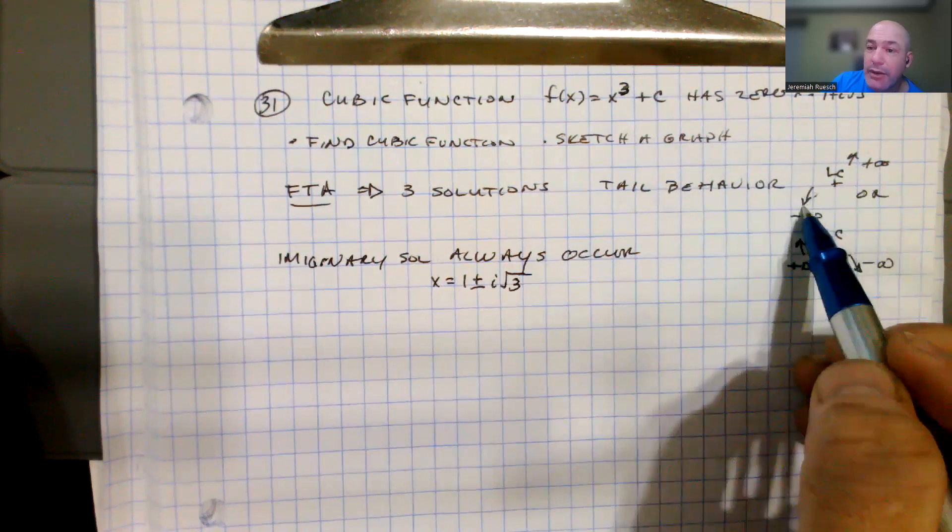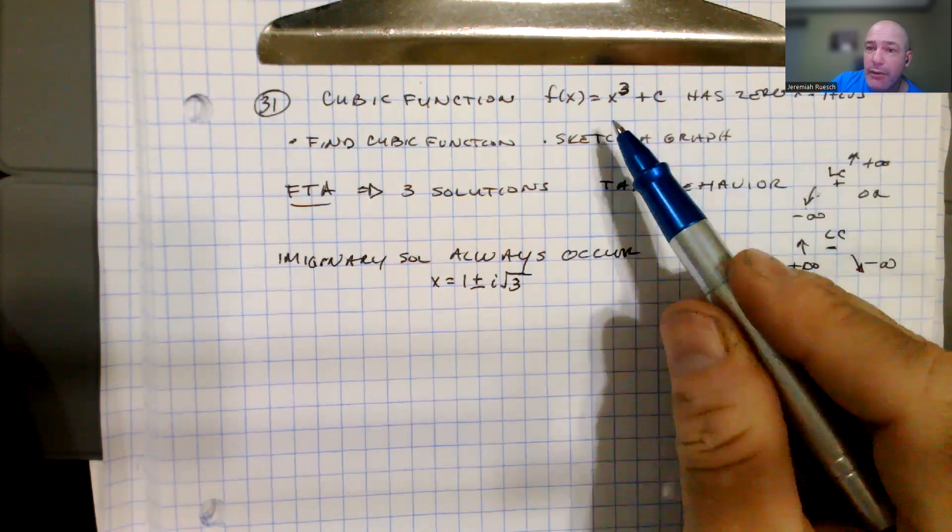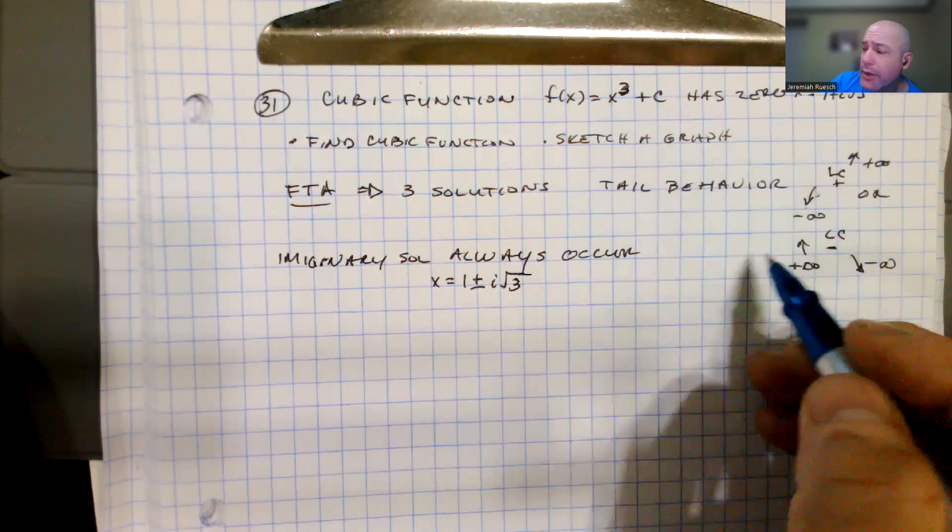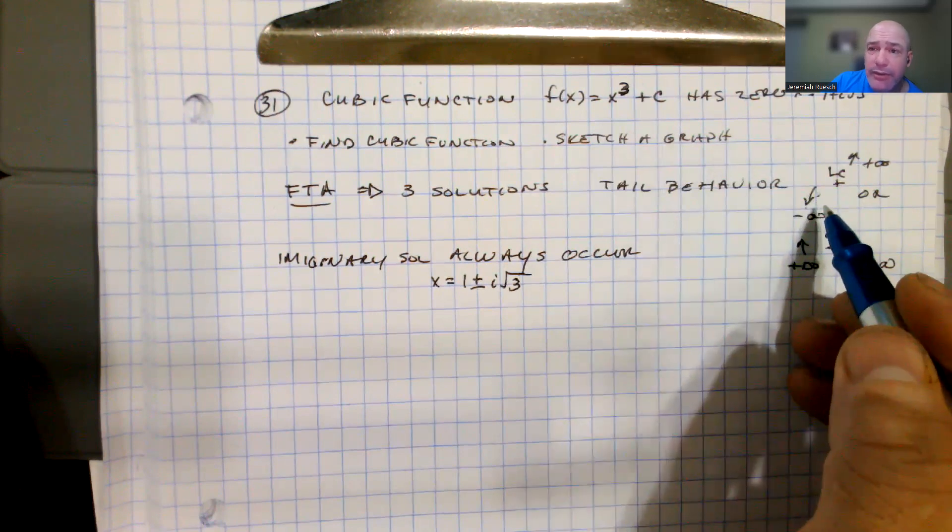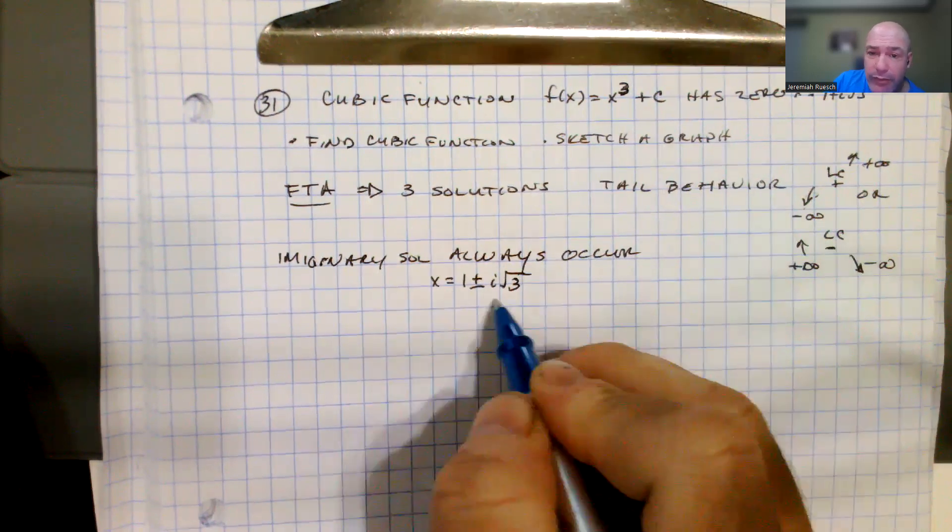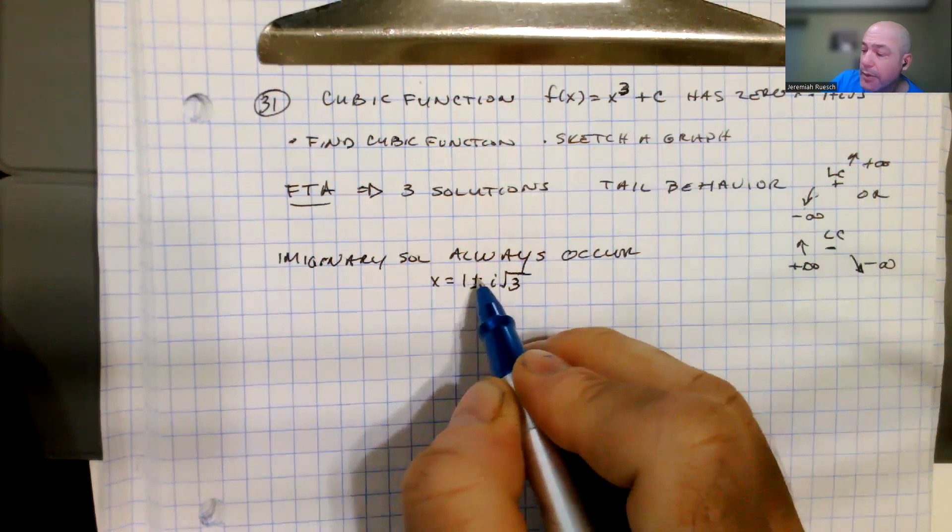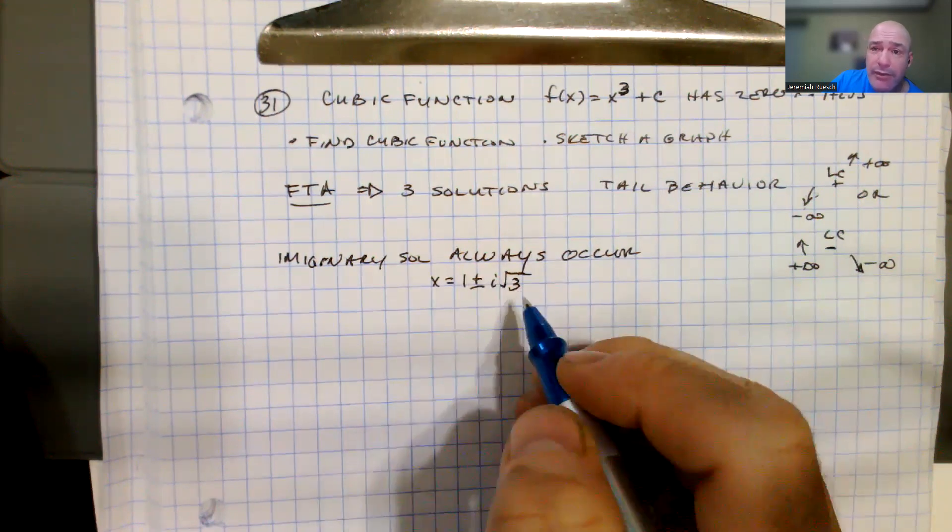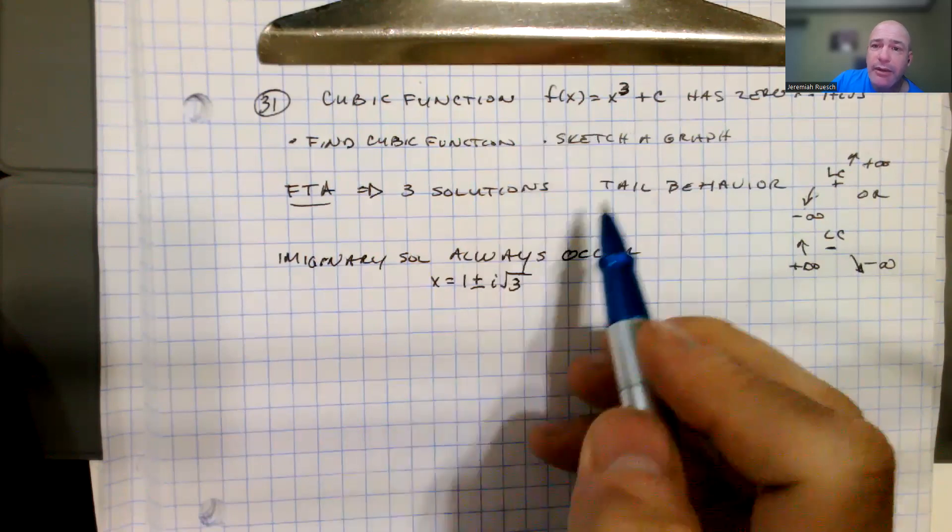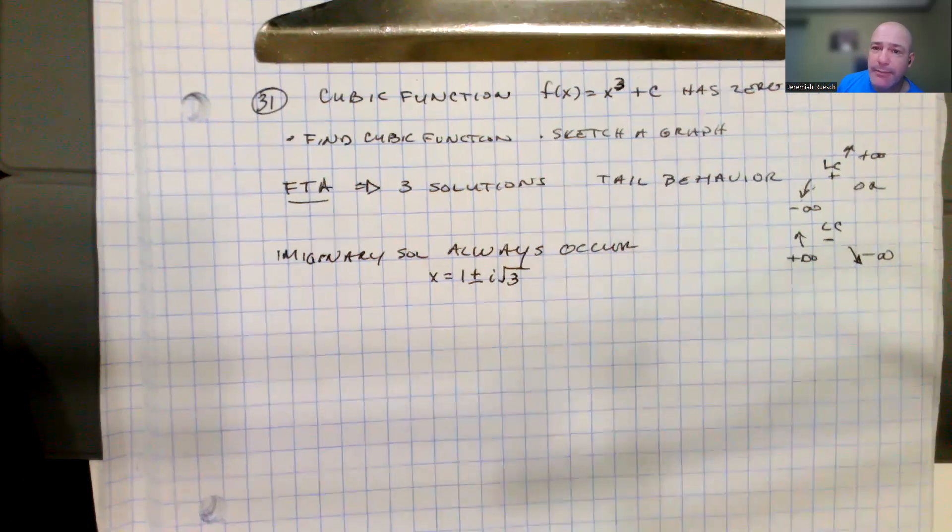So we have something that looks like this, where we have one tail going to negative infinity and the other tail going to positive infinity because the leading coefficient is a positive one. And we're looking for the one real intercept where it crosses the x-axis. So to do that, all we need to do is plug in the solution. Since we know that x equals 1 plus i square root of 3 is a solution, we know that f(x) is equal to zero.